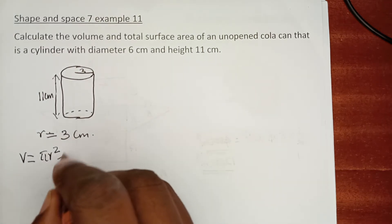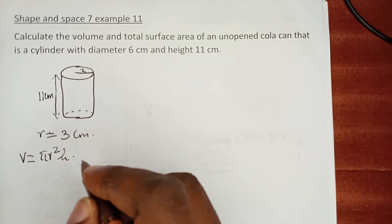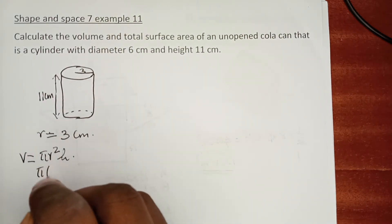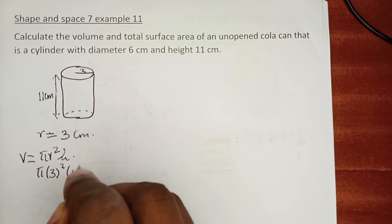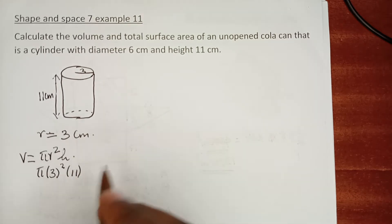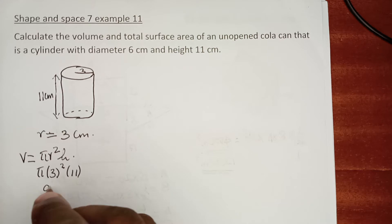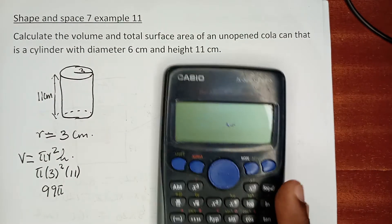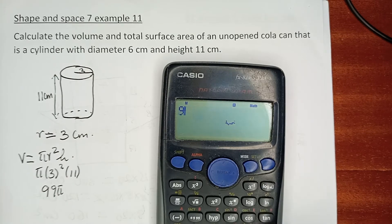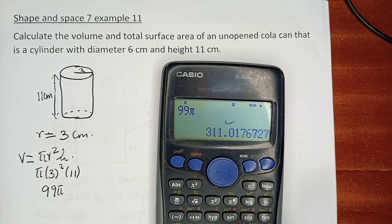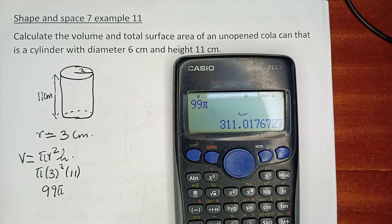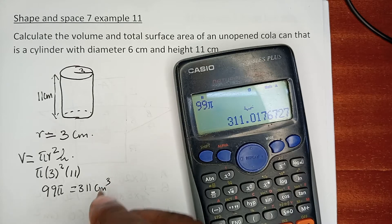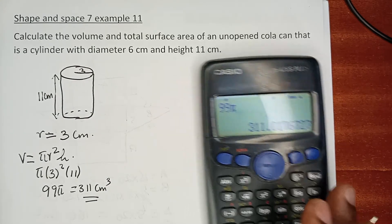You multiply πr² by the height to get the volume. The radius r is 3, so π times 3 squared times 11. That is π times 9 times 11, which is 99π, which we calculate to be approximately 311 cm³. That is the volume of the shape.